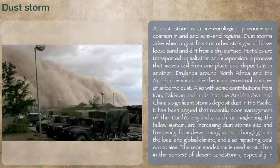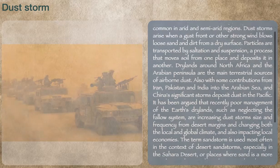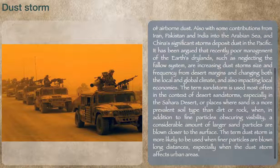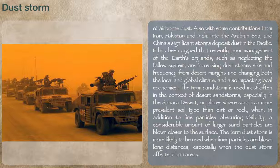It has been argued that recently poor management of the Earth's dry lands, such as neglecting the fallow system, are increasing dust storm size and frequency from desert margins and changing both the local and global climate.